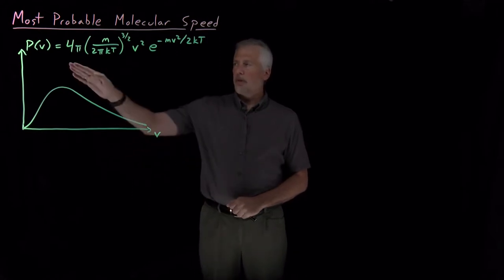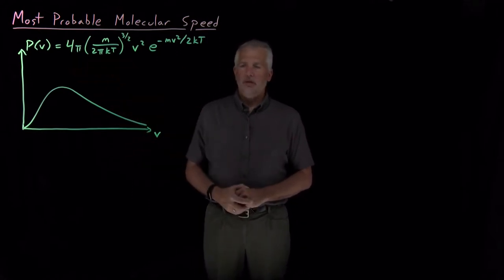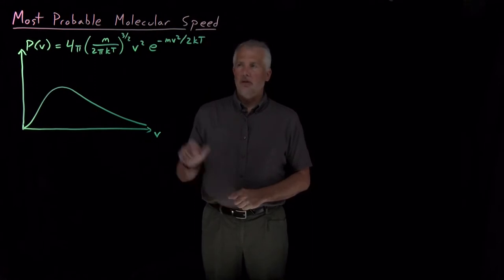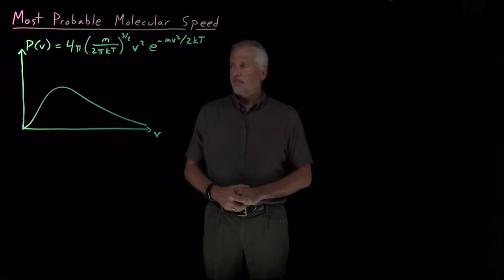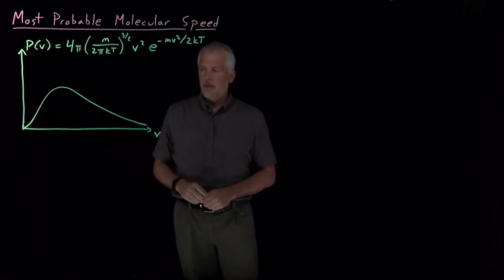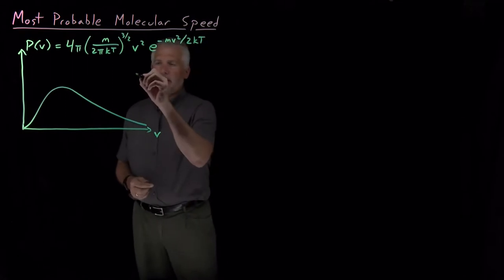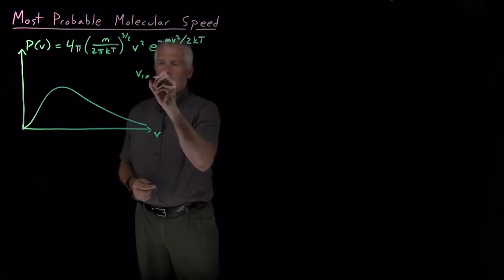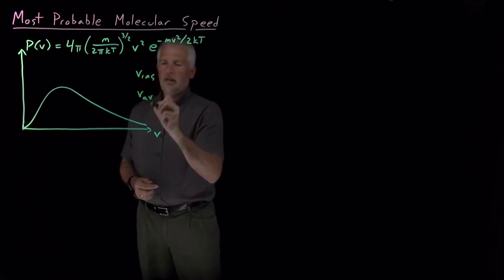The Maxwell-Boltzmann probability distribution tells us the probability that a molecule has a particular speed under certain circumstances, in particular at a particular temperature, and that tells us this full distribution of having various different speeds. We also have found that the root mean square and the average speeds can be calculated directly from the temperature and the mass of the molecule.